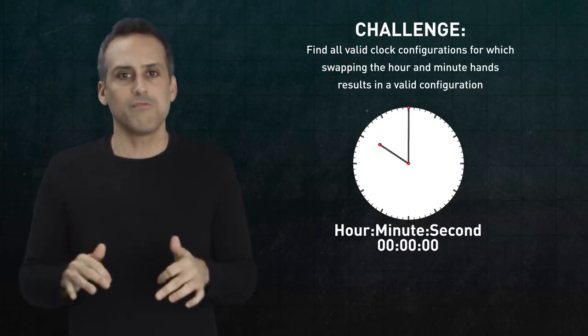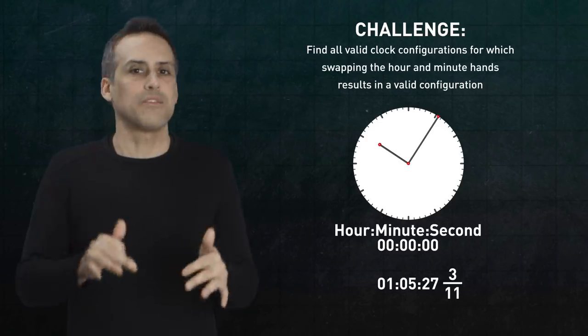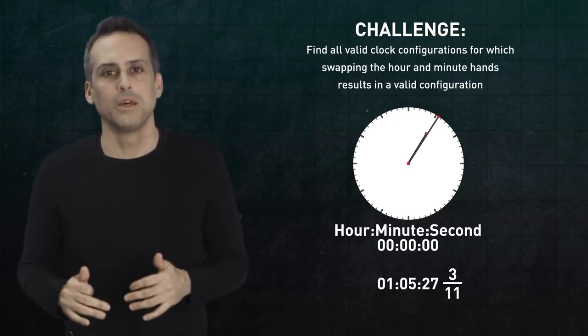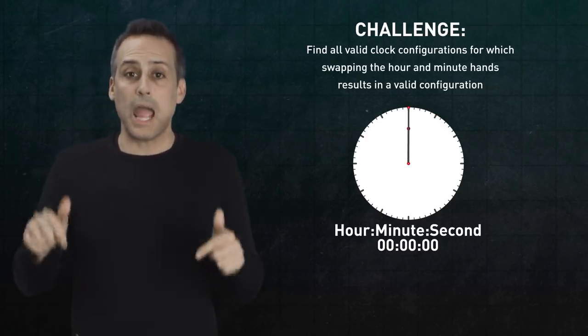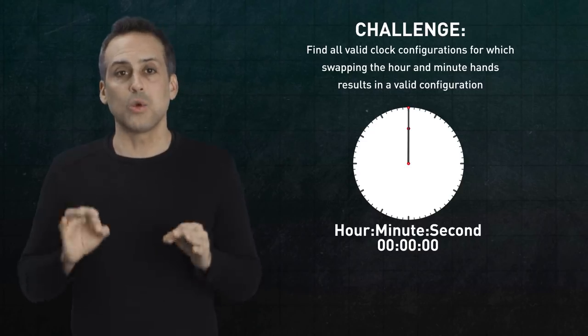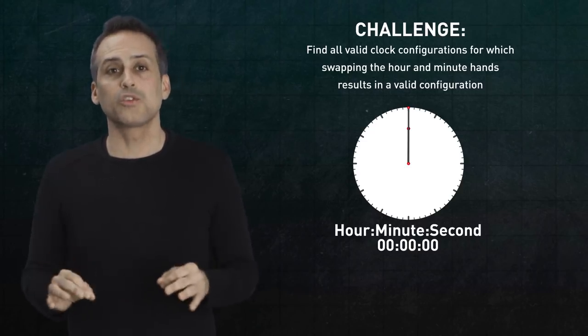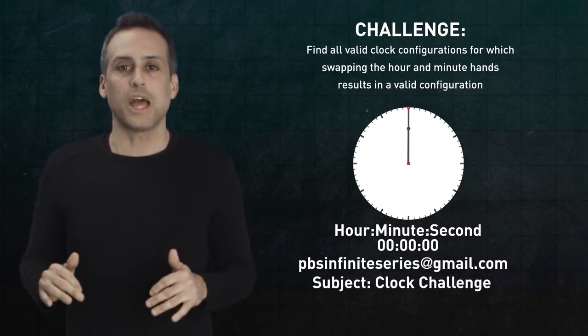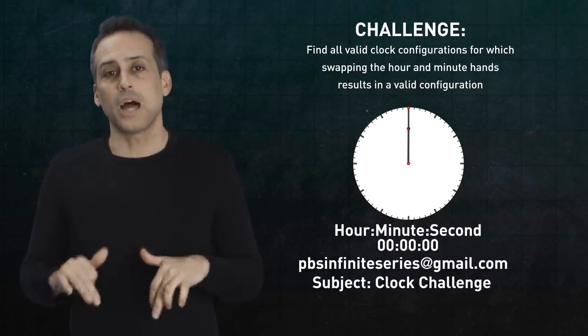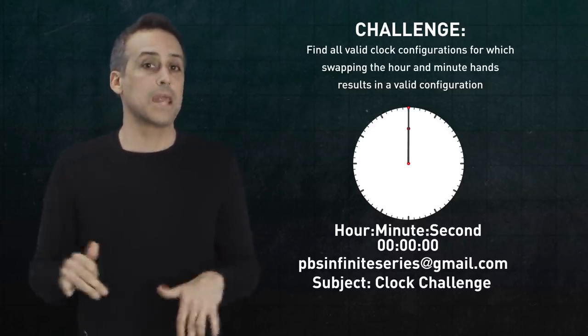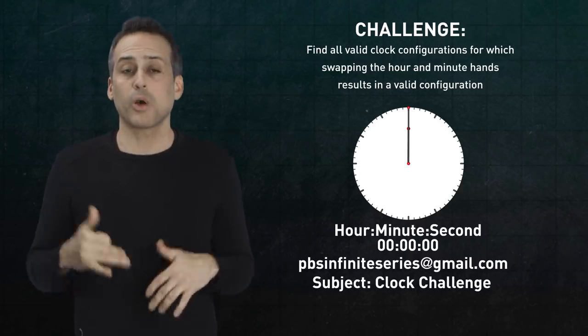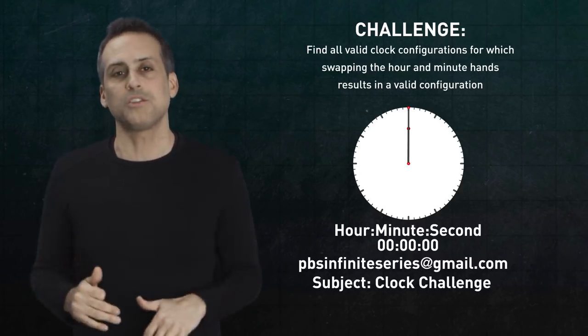For instance, one hour, five minutes, and 27 and 3/11 seconds after midnight. You need to report all and only the correct times in order to get credit. Email your solutions to pbsinfiniteseries at gmail.com with the subject line Clock Challenge within the next two weeks. We'll randomly select five winners from among the correct answers to receive a PBS t-shirt.